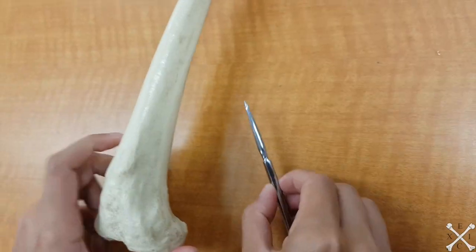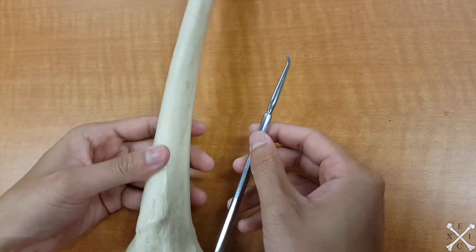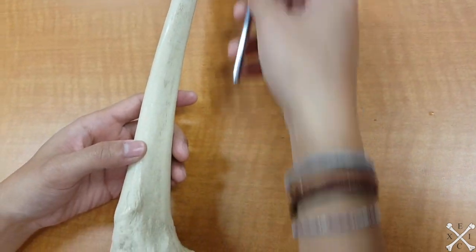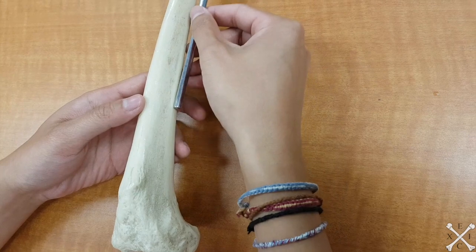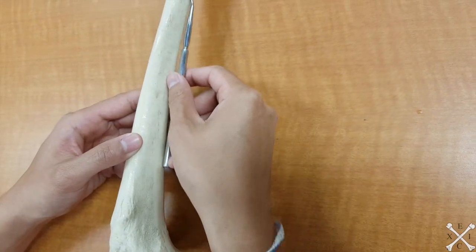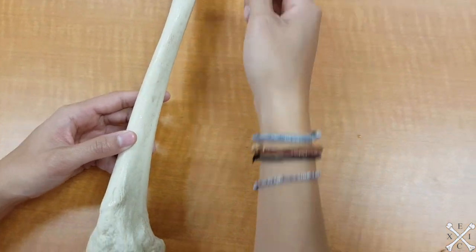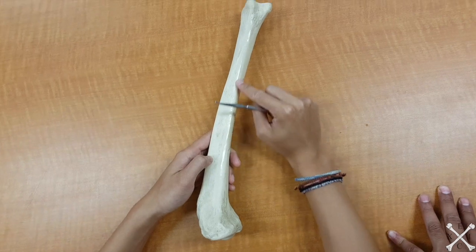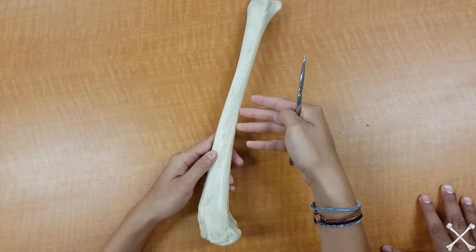Next up, we have the interosseous margin. So as you know, there would be a fibula right next to the tibia. And between these two bones would be your interosseous membrane. So laterally to your right tibia would be your interosseous margin, which is this line right here where the membrane attaches.